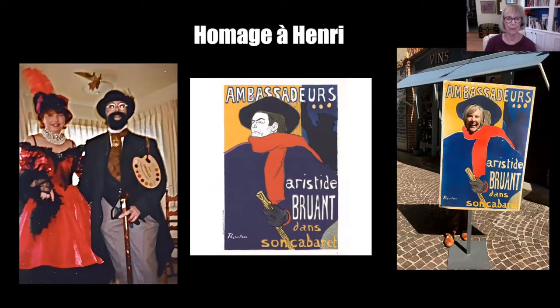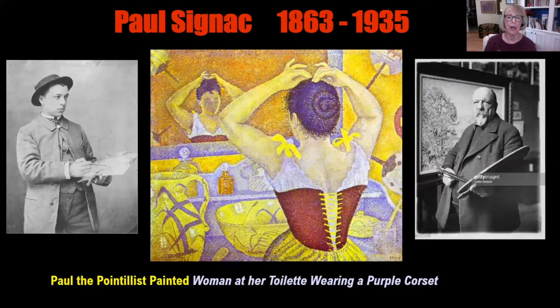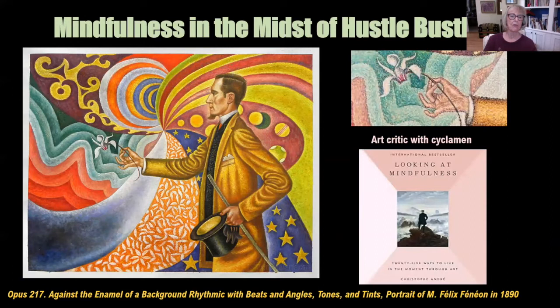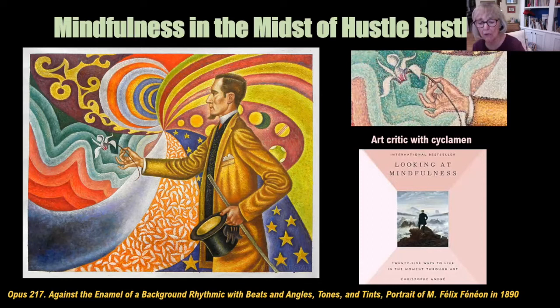Paul Signac was a pointillist. He painted the fun and gaiety of Paris. This is a woman - just like we looked at the backs of other women earlier - done in a pointillist style. But here's what I would consider his masterpiece, and it probably has, as my friend Gretchen said when she was proofreading this, the longest title of any artwork in the world. It's called 'Opus 217 Against the Enamel of a Background Rhythmic with Beats and Angles, Tones and Tints, Portrait of Monsieur Félix Fénéon in 1890.' Look at that background - he is so ahead of his time. This is all in pointillism, but that kaleidoscope, that fabulous pattern.